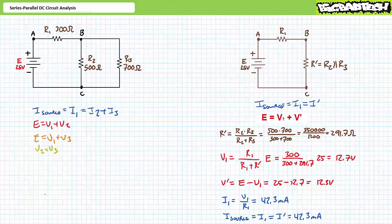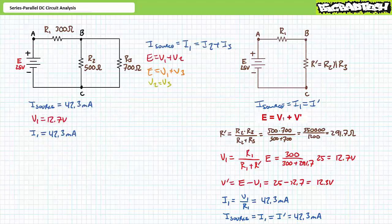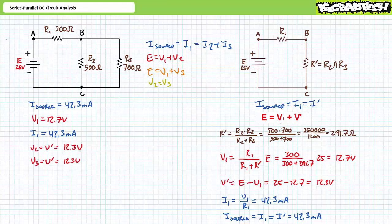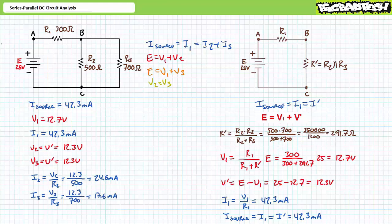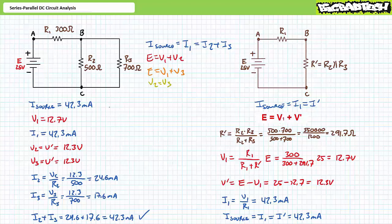Now that we've solved for the electrical properties of the series simplification, all we need to do is map these properties back to the original series-parallel circuit. We've already solved for source current at 42.3 milliamps, V1 at 12.7 volts, and I1 at 42.3 milliamps. Given simplification R single prime between nodes B and C is in fact the parallel combination of R2 and R3, it can be said that V2 and V3 are also 12.3 volts — because voltage across elements in parallel is the same. We can now use these voltage values to solve for current through each individual element. An application of Ohm's law demonstrates that I2 equals 24.6 milliamps and I3 equals 17.6 milliamps. The summation of I2 and I3 equals 42.3 milliamps — the amount of incoming current at node B and outgoing current at node C. What goes in does indeed come out.